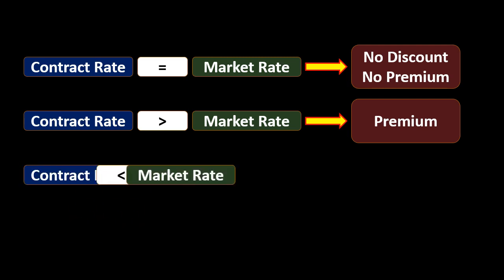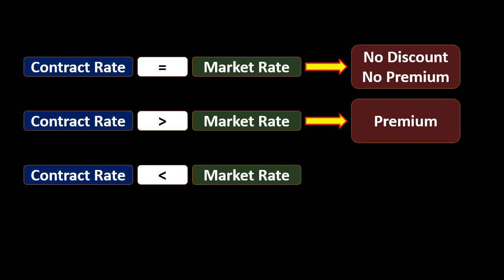The other possibility is that the contract rate is less than the market rate. The contract rate is printed on the bond, while the market rate is what we figure out based on what other similar securities are currently doing. If the contract rate is paying less than the market rate and we couldn't change anything, no one would buy our bonds — they could go elsewhere, invest the same $100,000, and get more interest earnings.